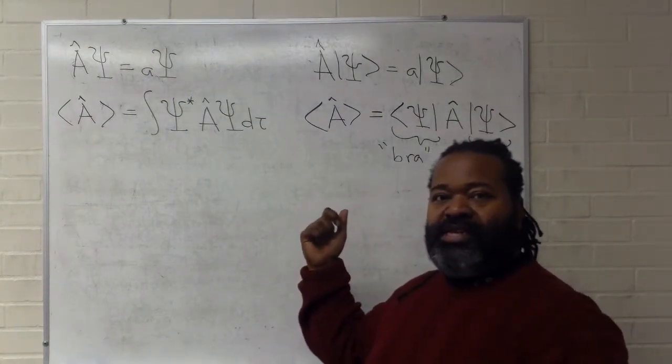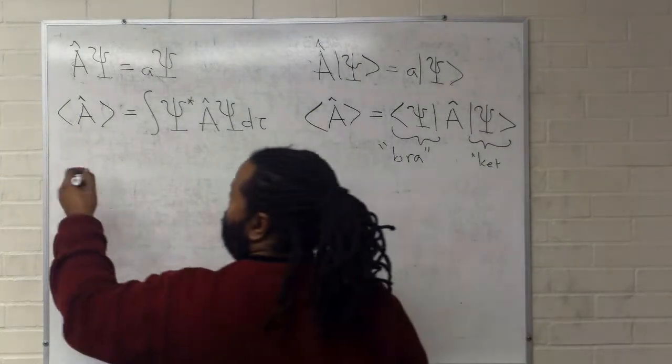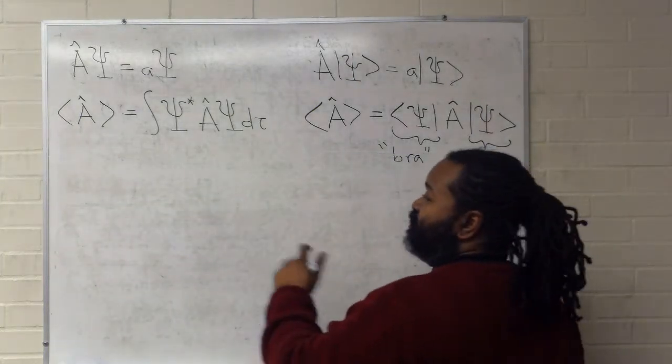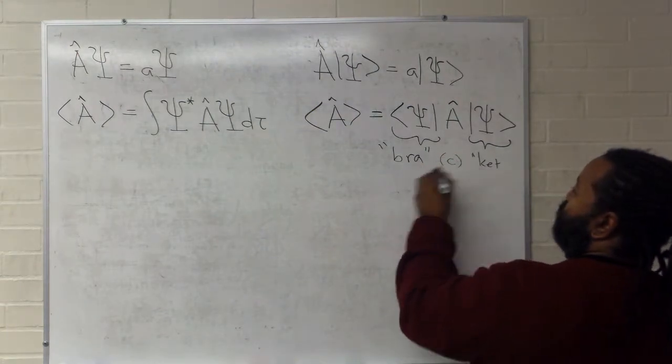And in order to figure out the entire value, the entire expression, in addition to that, we'll also need to define what the operator does to the system. This will give us what's referred to as a complete bracket.